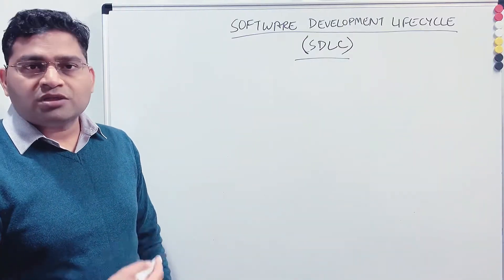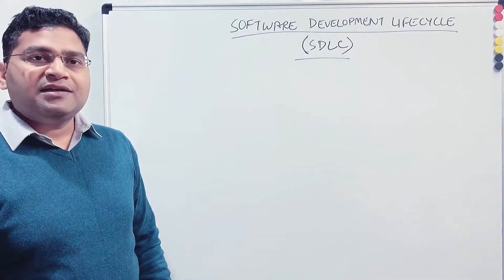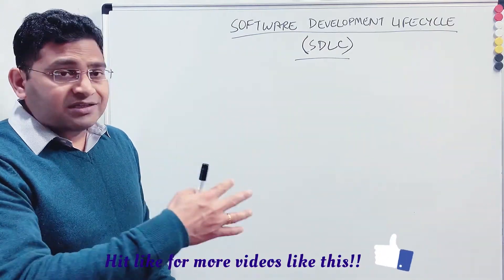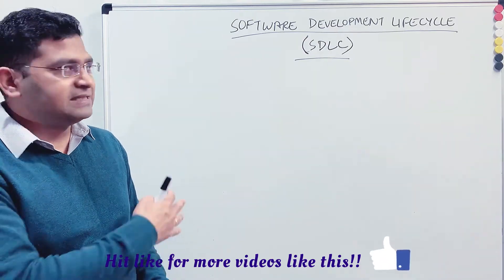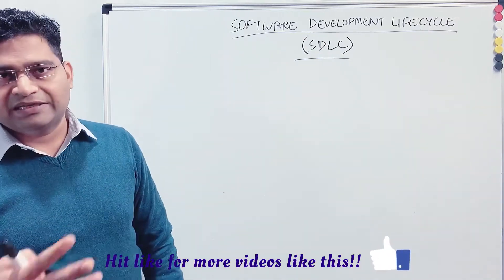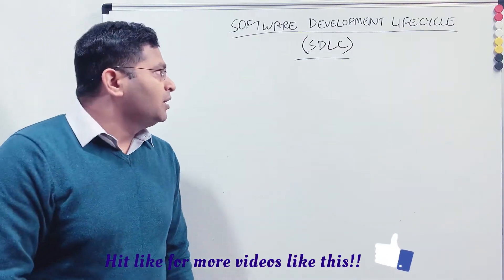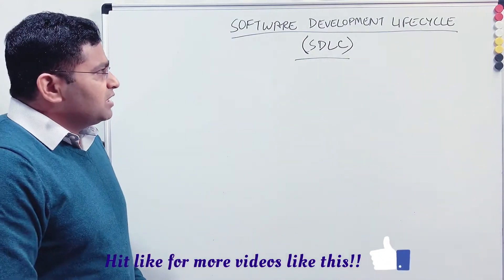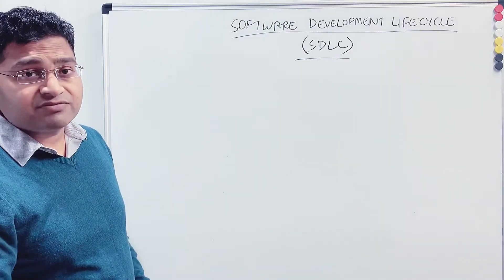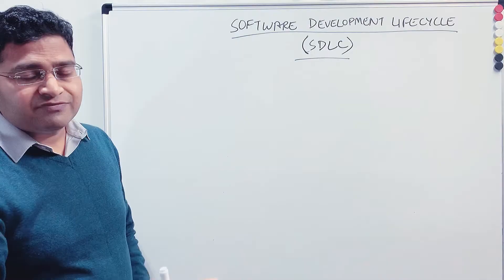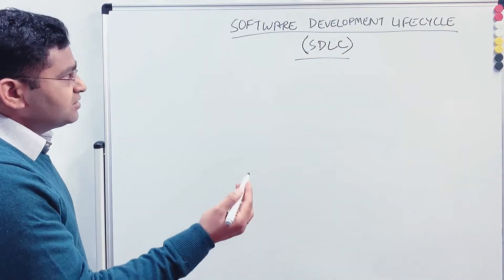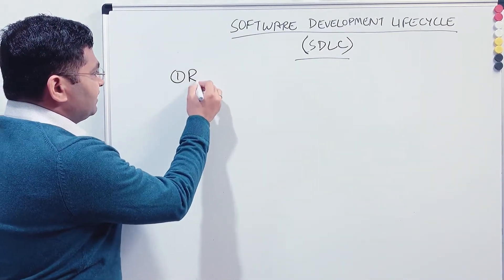We need to understand SDLC step-by-step, including all phases involved in developing, analyzing requirements, and delivering software to the customer. We'll also look at how SDLC differs across development approaches — for example, the Waterfall approach, the V-Model, and Agile. SDLC will be covered here, and in the next tutorial I'll cover the Software Testing Lifecycle (STLC), which is a subset of SDLC.